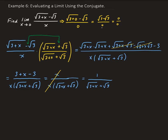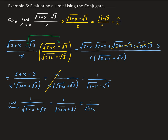Now we're going to take the limit of this expression as x approaches 0. Using direct substitution, letting x approach 0, we end up getting 1 over square root of 3 plus 0 plus root 3. So that leaves us with 1 over root 3 plus root 3, so that is 1 over 2 square root 3.